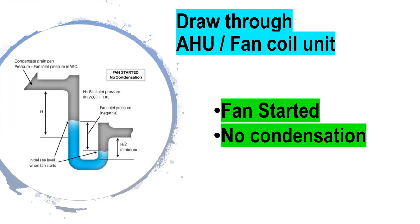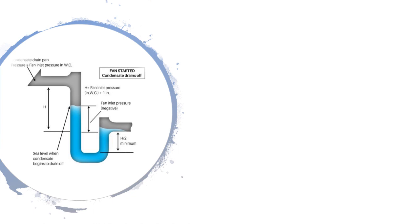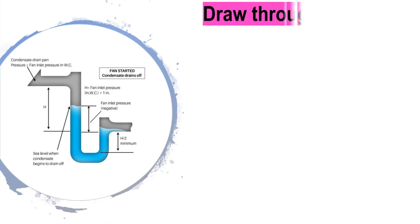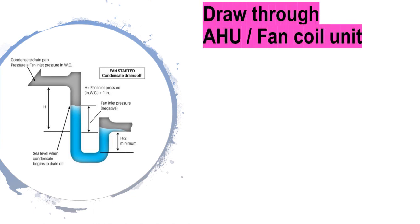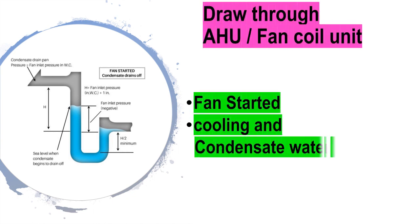When the fan starts and condensation has not yet begun, the water level of the U-trap increases on one side due to fan static pressure. That rise is J, which equals H divided by two. Now, as cooling and condensation begin, water starts to drain off.